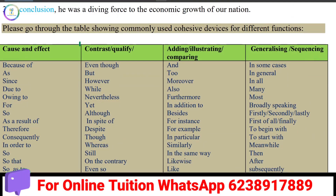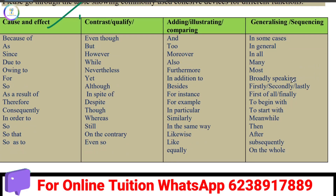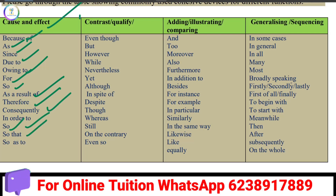We use the cause and effect relationship. Cohesive devices for cause and effect include: because of, as, since, due to, owing to that, so, as a result of, therefore, consequently, in order to, so that, so as to.